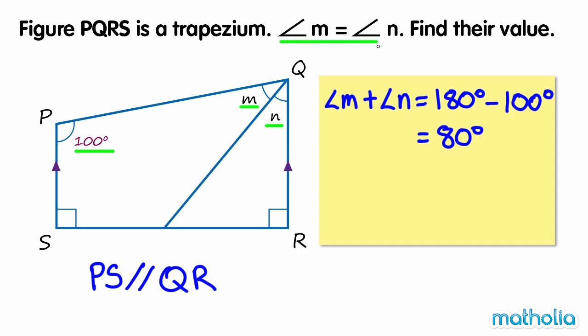Angle M and angle N are equal, so their value is half of 80 degrees. Angle M and angle N are both 40 degrees.